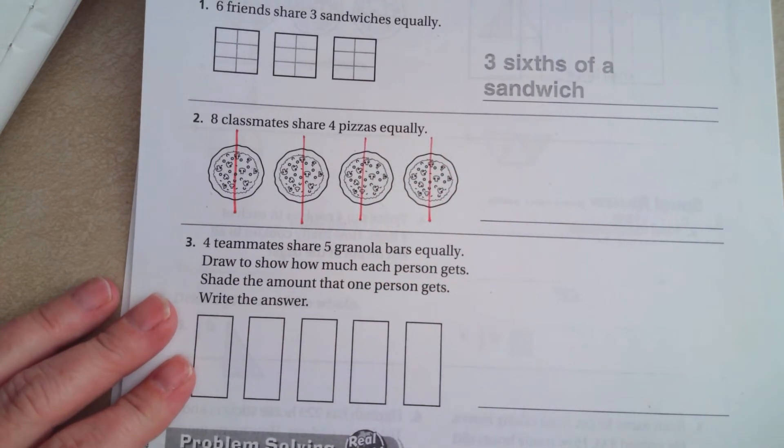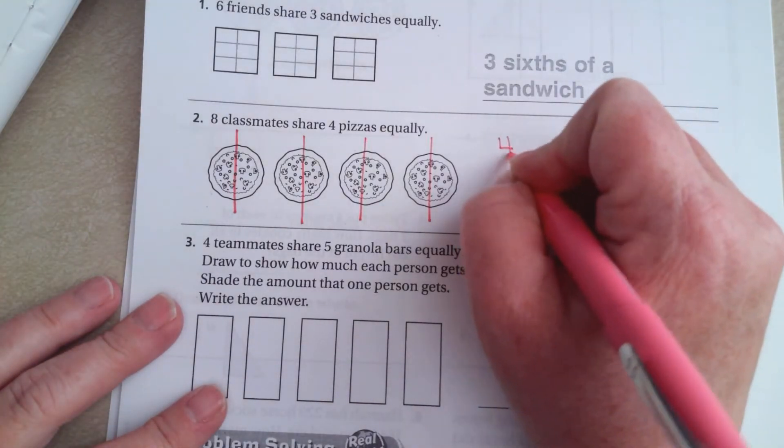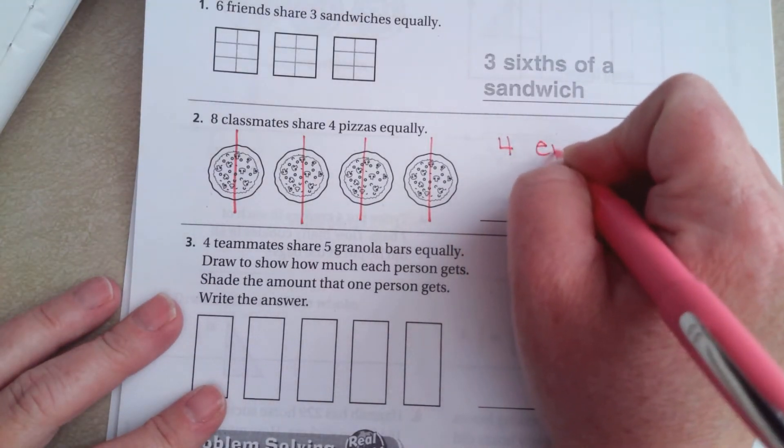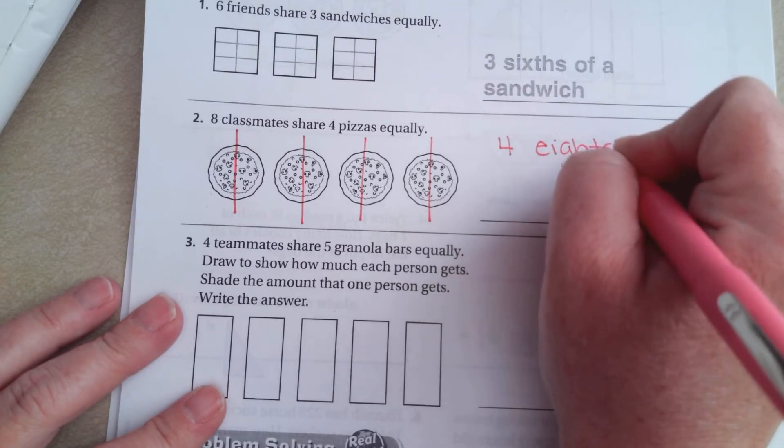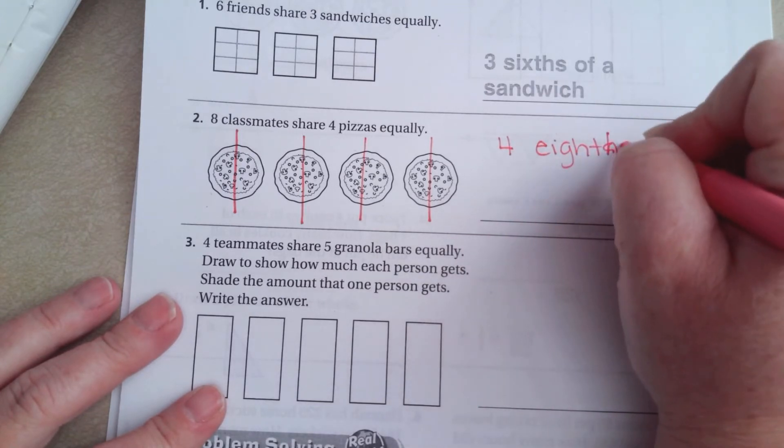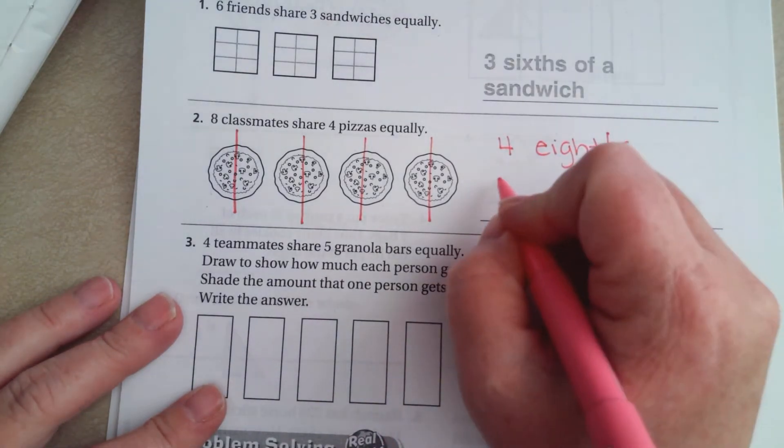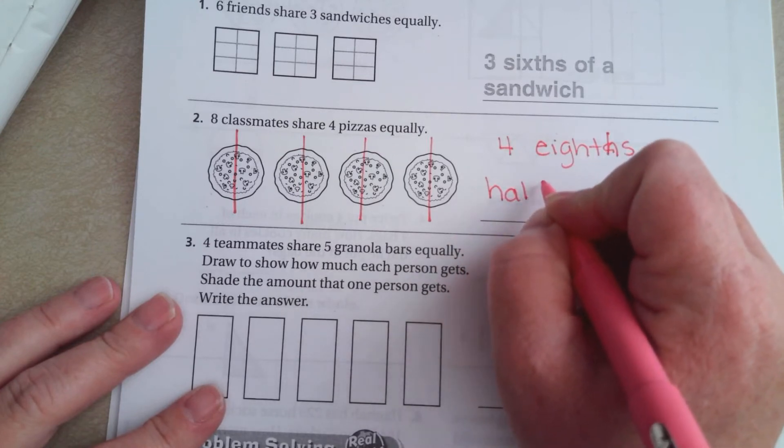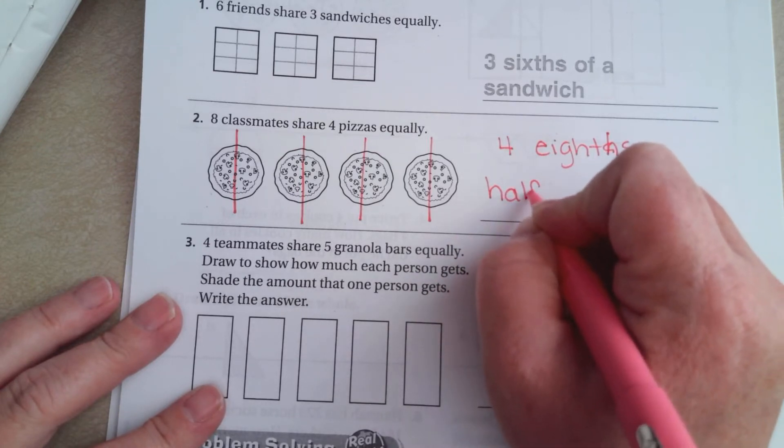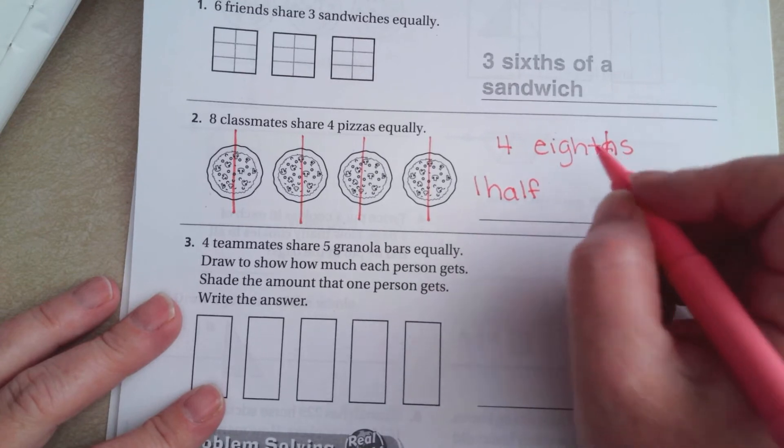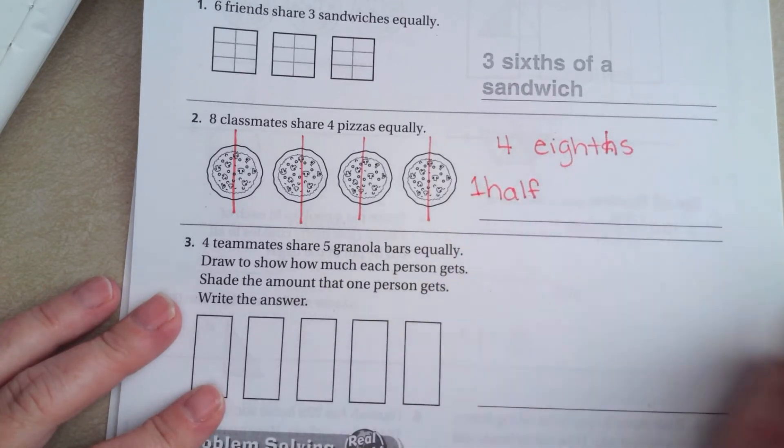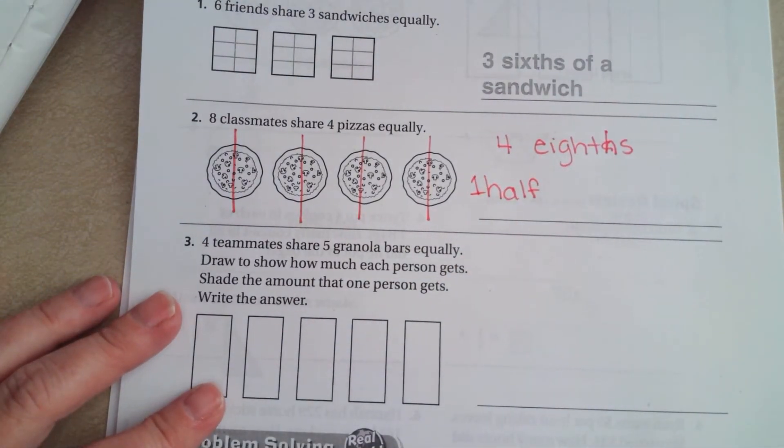So, each classmate would get either, you can write 4 eighths, or you can just write half, you can write 1 half. Either way.